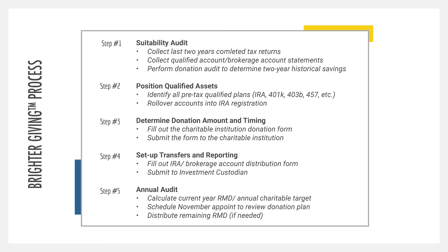Step four is setting up those transfers either yourself or with your advisor. Step five is an annual audit that ensures you're still on track with your charitable contributions, as well as still distributing your full RMD and avoiding any penalty. In the annual audit, you'll want to recalculate your current required minimum distribution, redetermine what your charitable amounts are going to be that year. We recommend you complete all of this by the end of the year — hopefully by October or November — to determine those donations and distribute the remaining required minimum distribution if needed, so you don't incur a penalty.